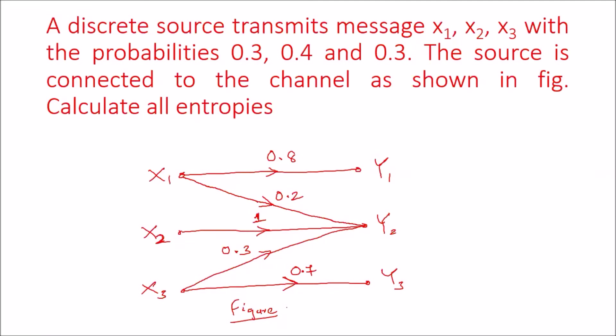A discrete source transmits messages x1, x2, and x3 with probabilities 0.3, 0.4, and 0.3. The source is connected to the channel as shown in the figure. Calculate all the entropies.